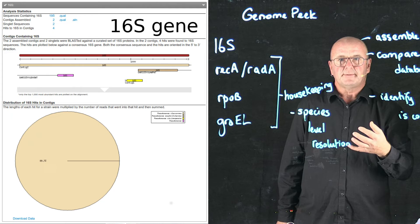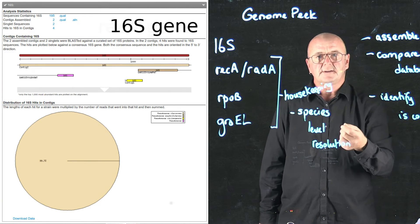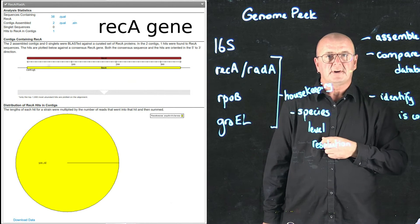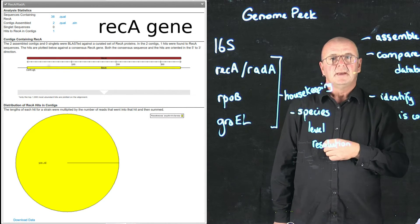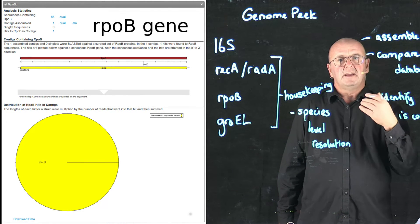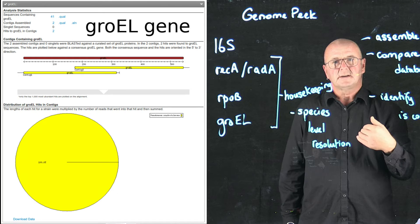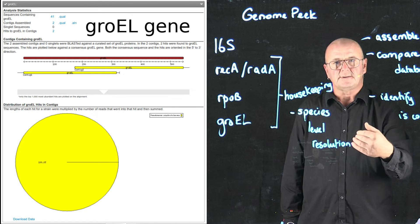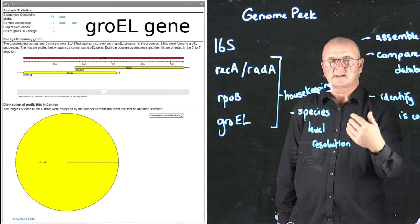And so in the first example here, we've taken a single genome where we've been able to get a pure isolate for that genome, and we've uploaded it to GenomePeek. And you can see that each of the four markers are showing there's only a single organism that's present in that dataset.